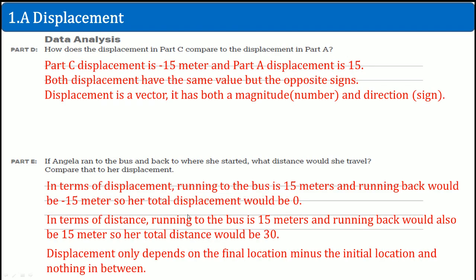In terms of displacement, running to the bus is 15 meters and running back would be negative 15 meters, so her total displacement would be zero. She technically never moved because her final spot and her initial spot were the same. In terms of distance, running to the bus is 15 meters and running back would also be 15 meters, so her total distance would be 30 because it takes into consideration what happens in the middle.